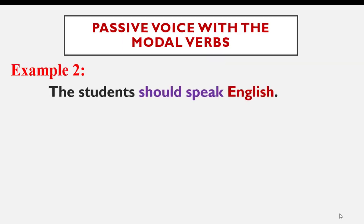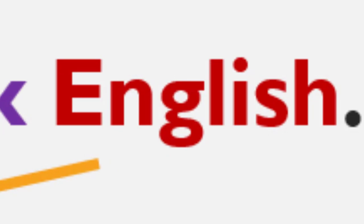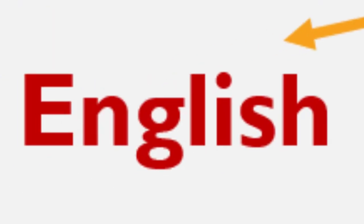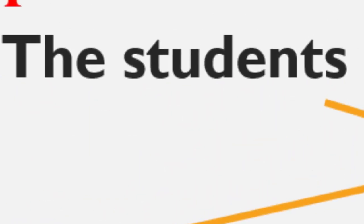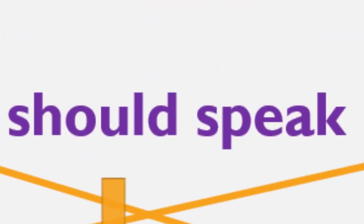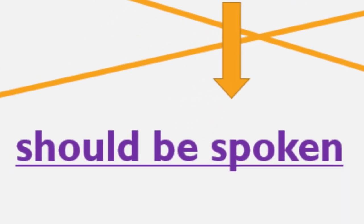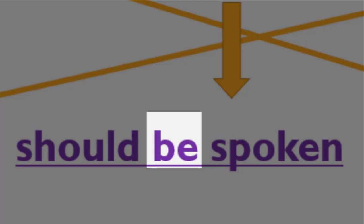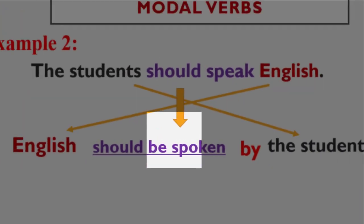Example number two: The students should speak English. English becomes the subject and the students become the object. We write should be, and notice the position of be — it is between the modal verb and the past participle — followed by spoken and by the students. That was the end of part number one. I hope you understood the lesson. See you in part number two.